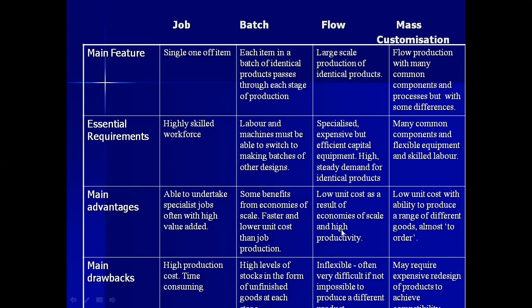One main advantage of flow production is low unit cost as a result of economies of scale. You produce in massive quantities — mass production — and buy raw materials in very large quantities, getting a huge discount from the supplier. This discount is greater than what is achieved in batch production. In flow production you buy the maximum amount, reducing average cost to the maximum level. Productivity is also very high — greater than batch production — because machines are used everywhere, including robots controlled by computers.